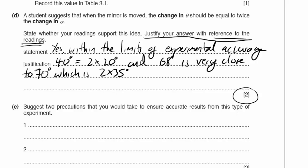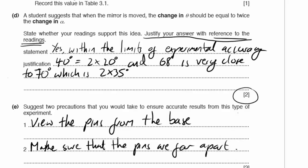Part E: suggest two precautions to ensure accurate results. Number one: always view the pins from the base, since the tops of pins can appear to shift. Number two: ensure the pins are placed as far apart as possible to improve the accuracy of the line direction.